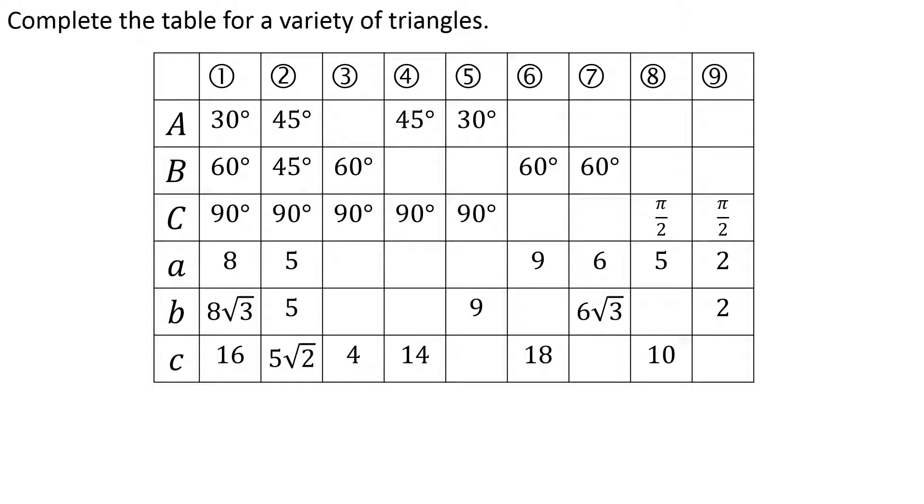Number 3, 30-60-90. Short leg has to be half the hypotenuse, so the short leg will be 2, and of course the longer leg will be 2√3.